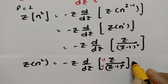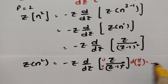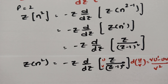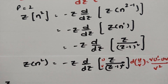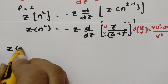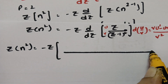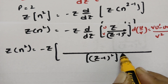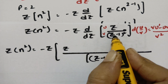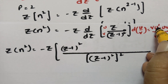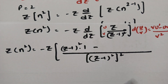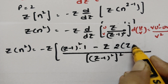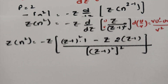Now I am considering the numerator as u and the denominator as v, and the derivative of u by v is v squared times u dash minus u v dash. Applying this quotient rule: Z of n square equals minus z times of z minus 1 whole square into the derivative of z, which is 1, minus z times 2 times z minus 1 to the power 1, all over z minus 1 to the power 4. Taking z minus 1 common gives z minus 1 minus 2z over z minus 1 to the power 4.